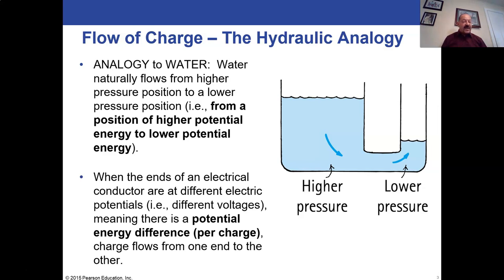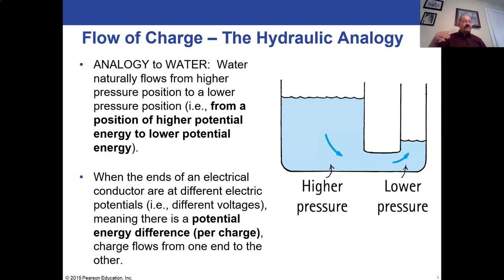When we're talking about electrical currents in electrical conductors — materials that allow current to flow, like copper wires — instead of having different potential energies due to gravity, we have different potential energies due to position relative to other charges. This is an amount of energy per charge, called the electric potential, also known as voltage, and it is the driving force that moves electric charges from one place to another in an electric current.